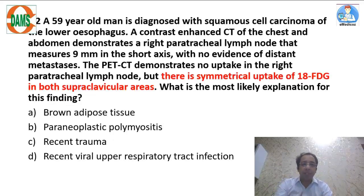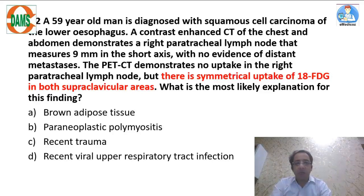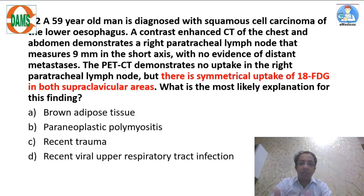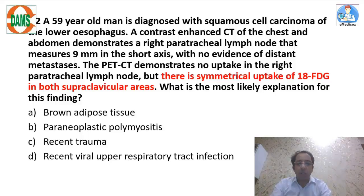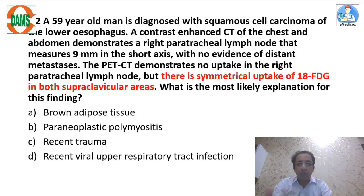In the second question, a patient had squamous cell cancer of the esophagus. CT chest and PET CT were done as part of staging. For CA esophagus staging, we use PET CT. Now look at the underlined line — there is symmetric uptake of FDG in the supraclavicular area. Symmetry in a radiological finding tells you we are dealing with something systemic or physiological.